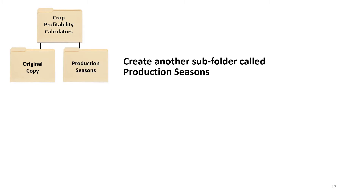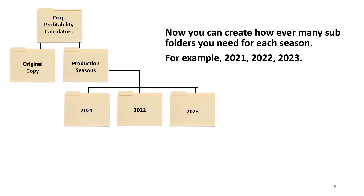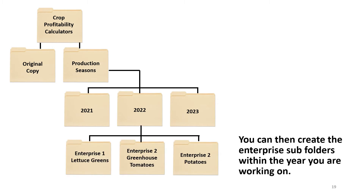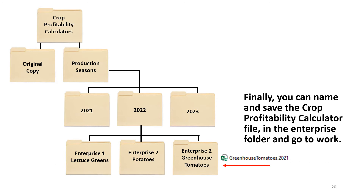Create another subfolder called Production Seasons. You can then create however many subfolders you need for each season — for example, 2021, 2022, 2023. You can then create the Enterprise subfolders within the year you are working on. Finally, you can name and save the Crop Profitability Calculator file in the Enterprise folder and go to work.